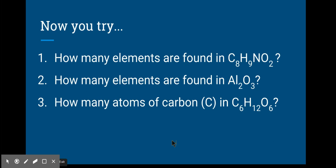So now you guys try. So number one, how many elements are found in C8H9NO2? Good. Hopefully you were able to count your capitals, so you get one, two, three, four, so four different elements.